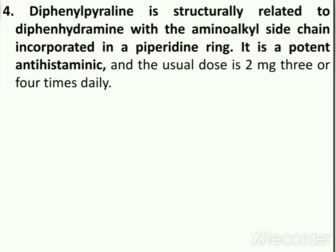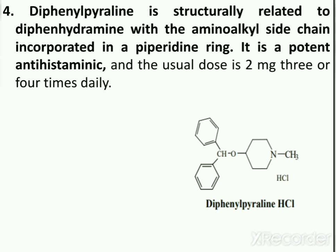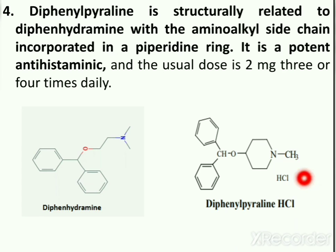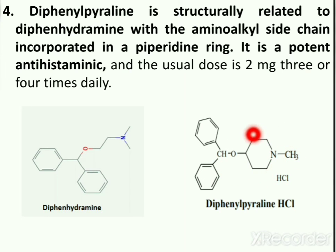Finally, diphenylpyraline is structurally related to diphenhydramine, with the aminoalkyl side chain incorporated into a piperidine ring. It is a potent antihistaminic and the usual dose is 2 mg, 3 or 4 times daily. The structure of diphenylpyraline is shown here alongside that of diphenhydramine, where you can see the aminoalkyl side chain incorporated in the piperidine ring.